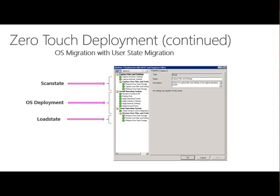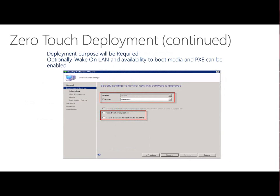When doing our USMT task sequence, we need to call out the right version of the migration process. You'll need to make sure you have two different packages — one for the older version and one for the newer version. When we're doing our deployment in a zero-touch scenario, we're pushing it out and forcing it, so we always make sure we push it as a required installation.